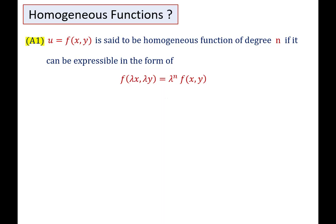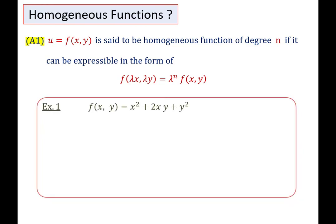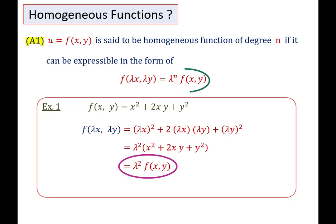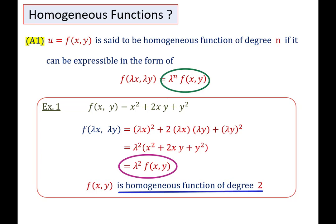To make this concept more clear, we are taking some examples. First example: suppose F(X, Y) = X² + 2XY + Y². Replacing X by λX and Y by λY, we get F(λX, λY) = λ² (X² + 2XY + Y²), which is in the form λ^n F(X, Y). So the function F(X, Y) is a homogeneous function of degree 2.